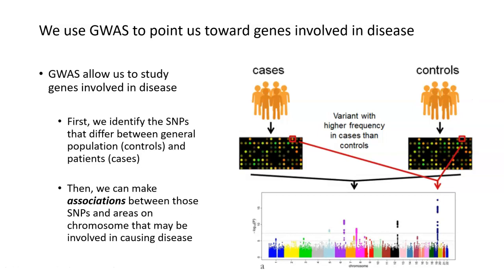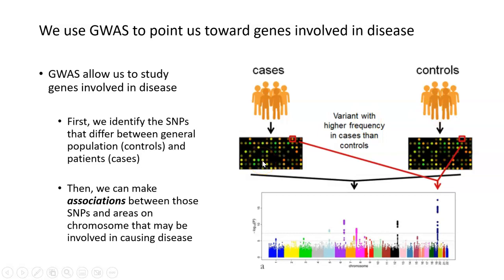We take those genome sequences of these two groups and compare them to each other. We're able to identify single nucleotide polymorphisms, or SNPs — differences between individuals who have the disease and individuals who don't. This implies that there might be something going on at the location of this single nucleotide polymorphism that's leading to disease.